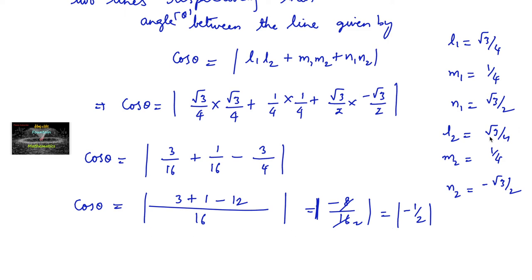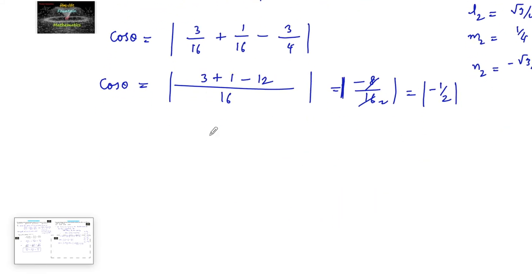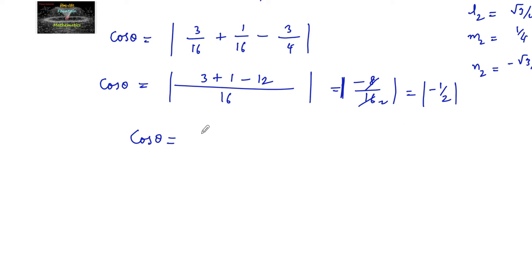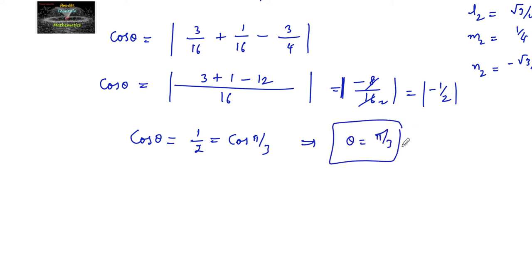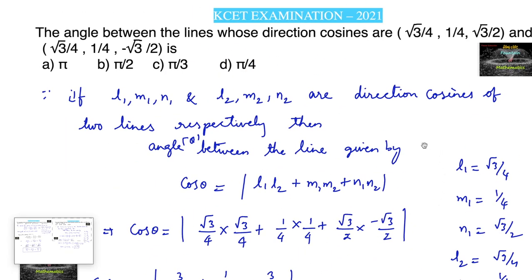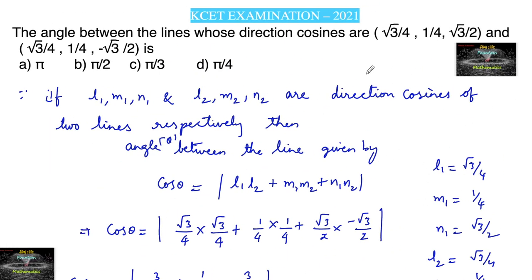Therefore, cos θ = mod of minus 1 upon 2 = 1 upon 2, which is cos π upon 3. So θ = π upon 3, which is 60 degrees. The angle between the two lines with the given direction cosines is π upon 3, so option C is the right answer.